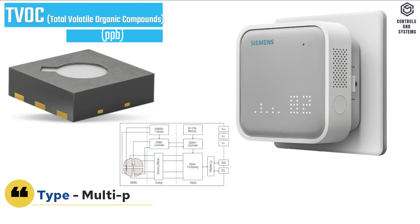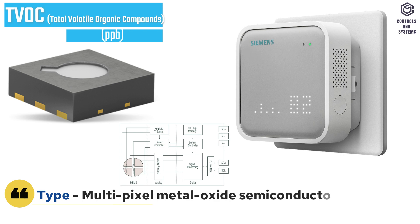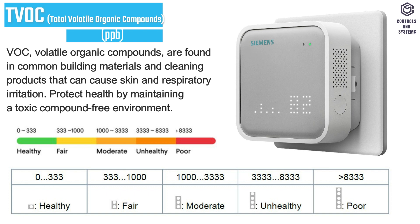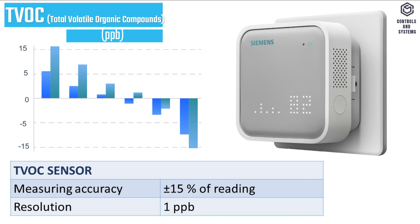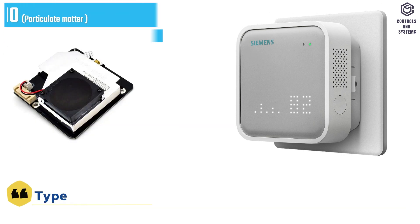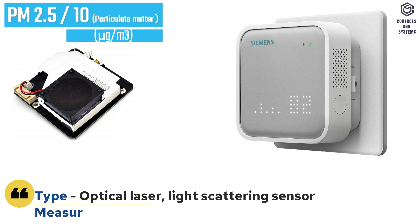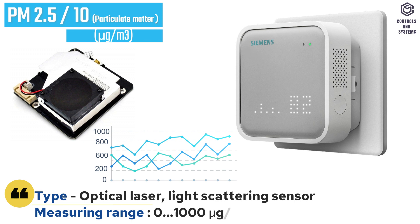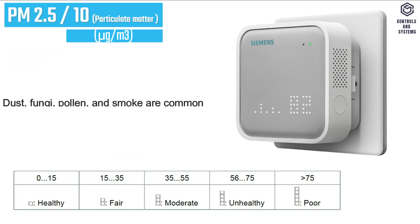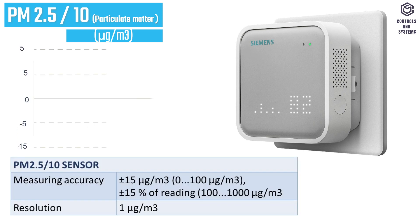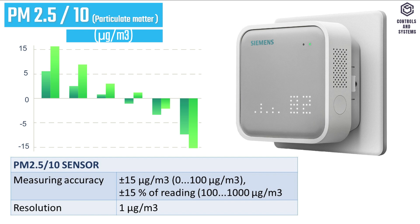TVOC sensor type is a multi-pixel metal oxide semiconductor sensor, measuring range 20 to 36,000 ppb. The TVOC range will depend on the number of LED counts shown in the table. PM2.5 sensor type is an optical laser light scattering sensor, measuring range 0 to 1000 micrograms per cubic meter. The PM2.5 range will depend on the number of LED counts shown in the table. Measuring accuracy and resolution are shown in the table.